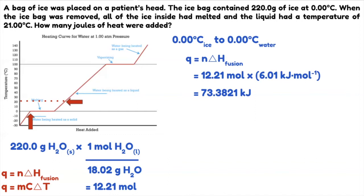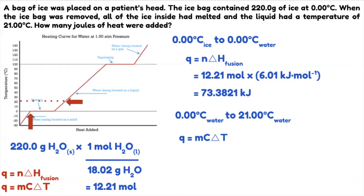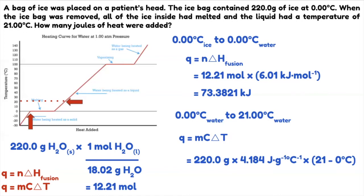Now we have 0 degree water. The next step is going from 0 degree water to 21 degrees water — that's our endpoint. The formula is Q = mCAT: mass times specific heat times change in temperature. Change in temperature is final minus initial. So: 220 grams times 4.184 joules per gram degree Celsius times (21 minus 0 degrees Celsius).